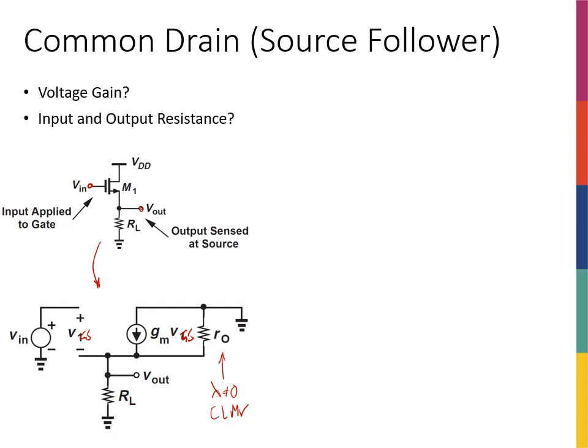To find the gain, I want to know what is Vout. I know that Vout is equal to RL times IL. But I don't know exactly what IL is because it's not just GM·VGS — part of GM·VGS is actually going to R0 to ground. Because the current is being split at this node, it's better to write KCL at node Vout.